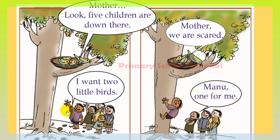Who is this? This is our Manu. Manu says: I want two little birds. Let's be two birds. Three birds. I want two little birds. The tree is going to be a place for these birds. They are going to be happy.